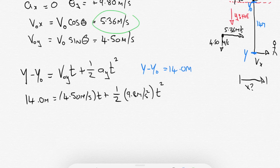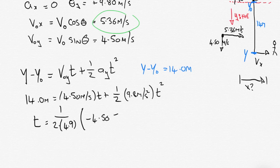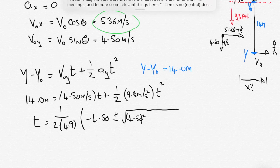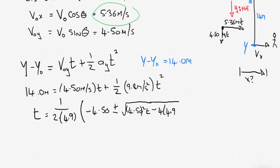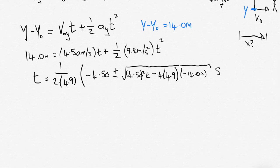We've got a t and a t squared here, which means we're going to need the quadratic formula to solve this one. Applying the quadratic formula with coefficients 4.9, 4.50, and -14.0, we get two roots — one negative and one positive. We can't have a negative time, so the answer we're looking for is the positive root: t equals 1.29 seconds. That's the airborne time.